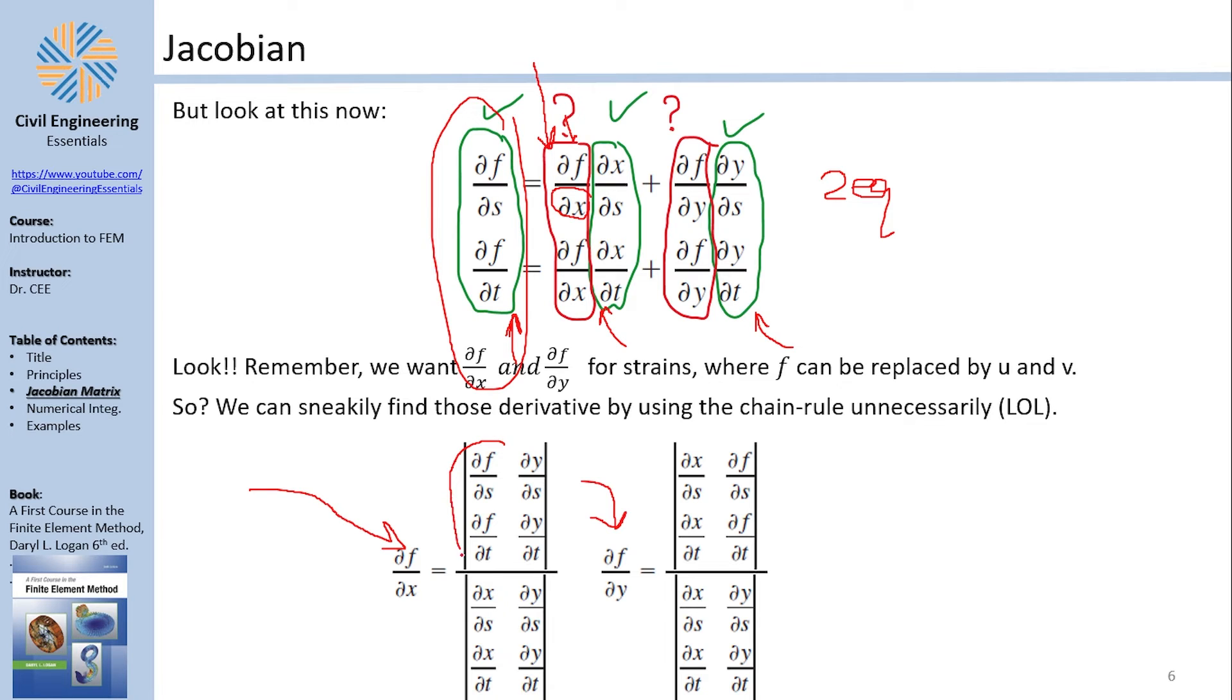You see, I'm using the chain rule to find this, not because I'm asking what is partial f to s. I actually want to find that. Now, those are two equations with two unknowns, and you know from Kramer's law or whatever, that this is actually the solution for each one of those. It's not this what we want, it is this, and we need to solve for it. You see, anything with respect to s and t is something I can easily obtain, which means yes, I can find partial f to partial y and partial f to partial x.